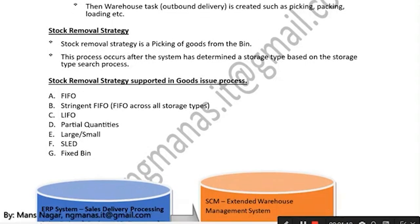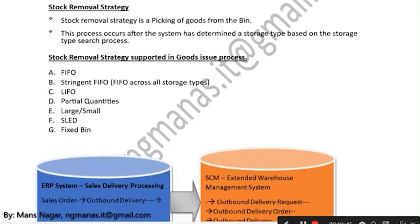Stock removal strategy is the picking of goods from the bin when you want to remove stock from the warehouse. You pick the goods from the bin and then perform the stock removal strategy to send the goods out of the warehouse to the vendor or customer. This process occurs after the system has determined a storage type based on the storage type search sequence.